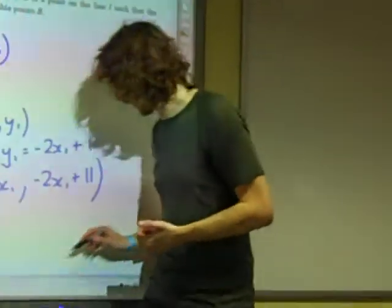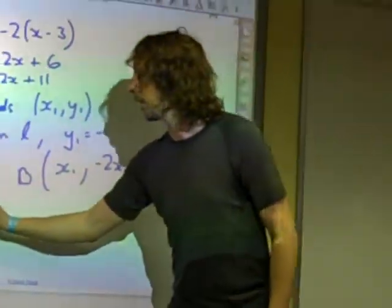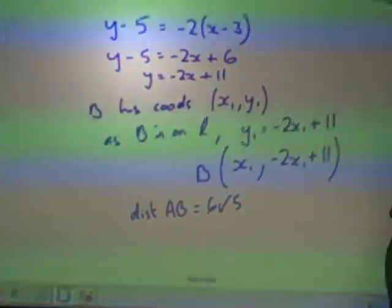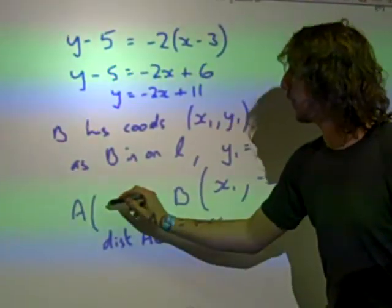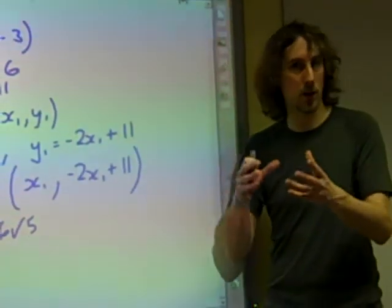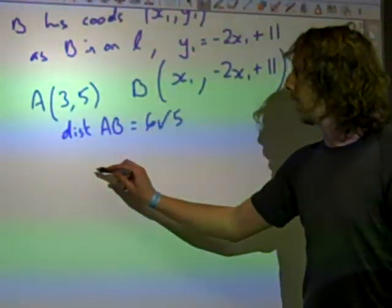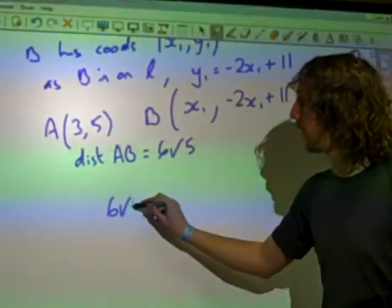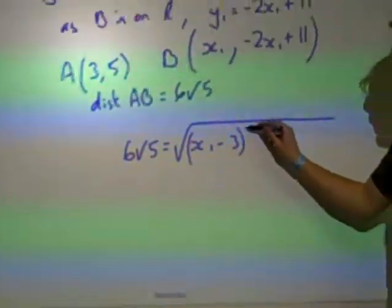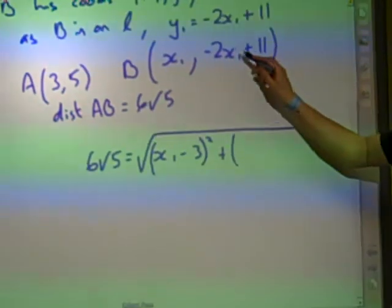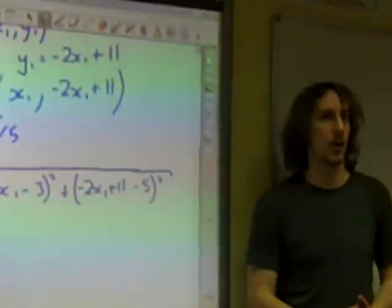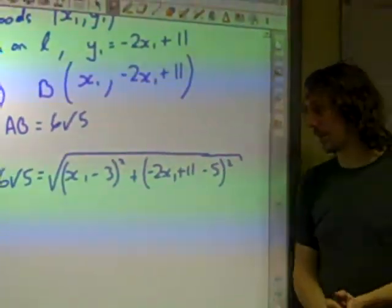The final thing that we've got is that the distance of AB is 6 root 5. So we can use our formula for finding the length of the line with the points. A was the point (3, 5). B is the point x₁, minus 2x₁ plus 11. Let's throw all of that into our formula for the length of the line and see what happens. So we get 6 root 5 equals the square root of (x₁ minus 3) squared plus (minus 2x₁ plus 11 minus 5) squared. That's all inside the square root sign. I don't particularly like that square root sign.